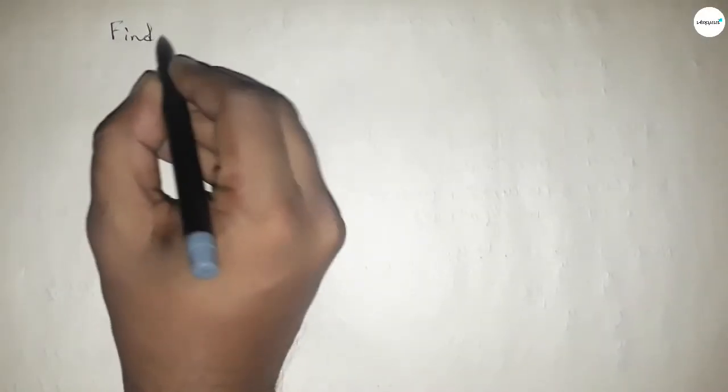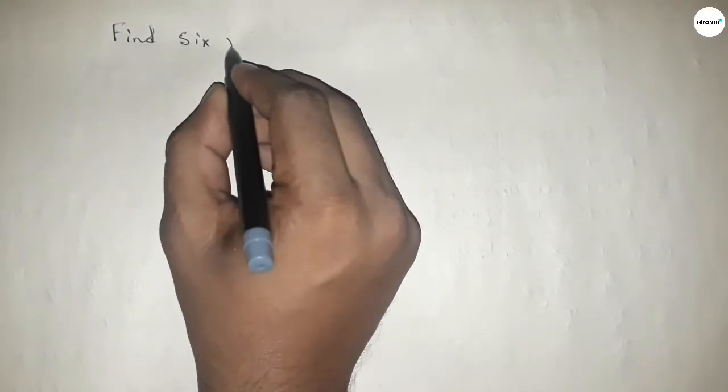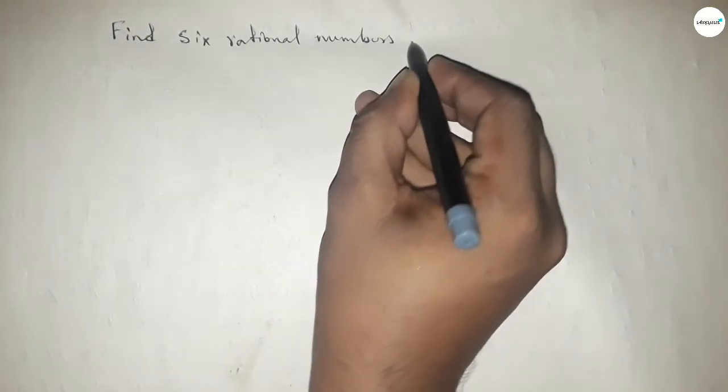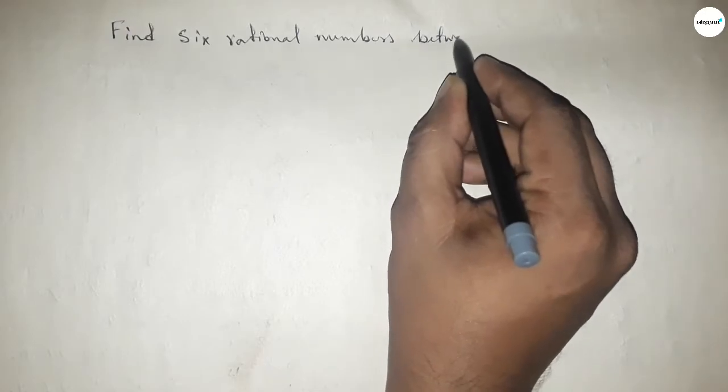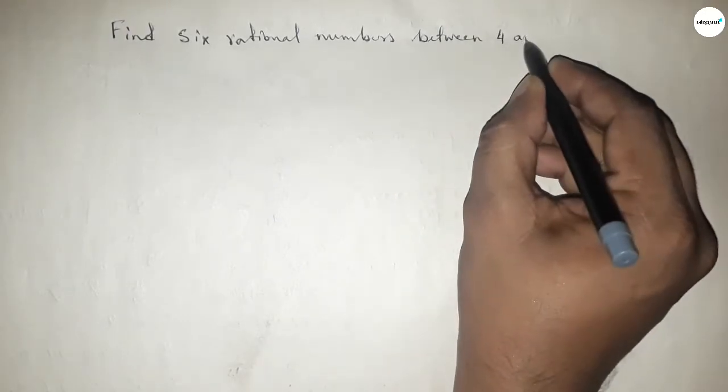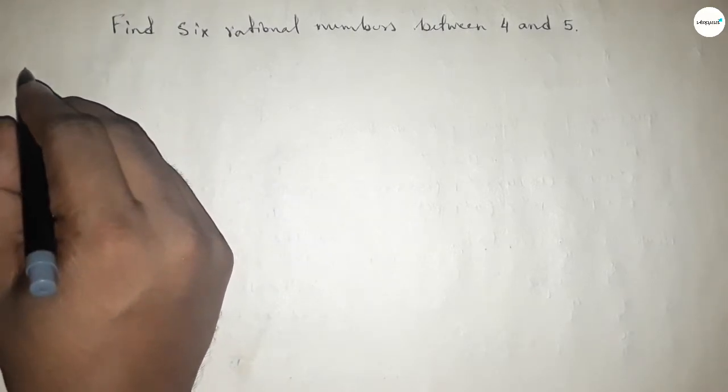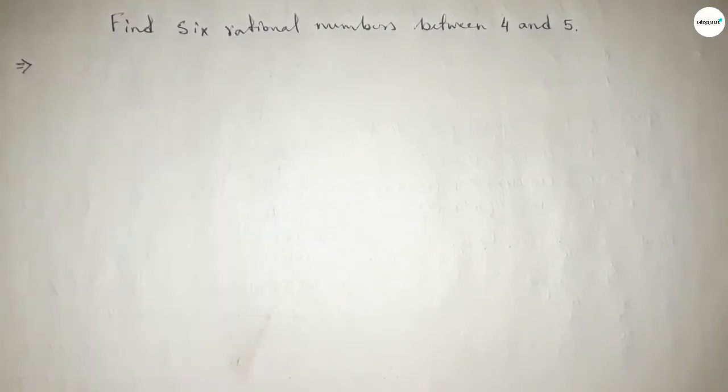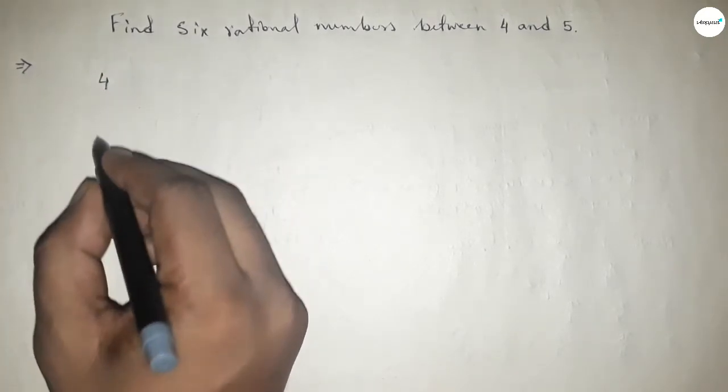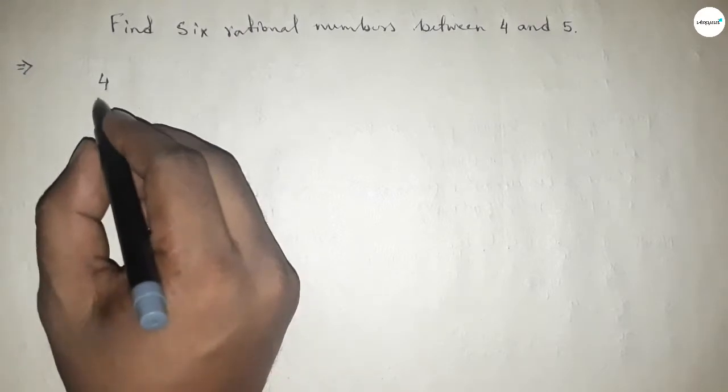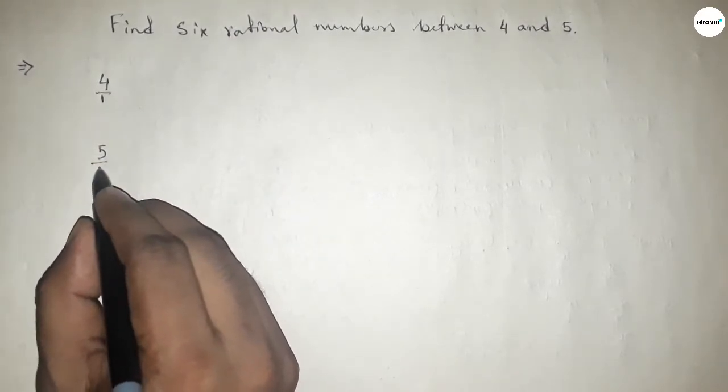Hi everyone, welcome to SSR classes. Today in this video we have to find six rational numbers between 4 and 5. So finding six rational numbers, let's start. First of all, write down here the given numbers 4 and 5. Then we can write 4 as 4/1 and 5 as 5/1.